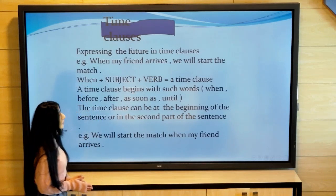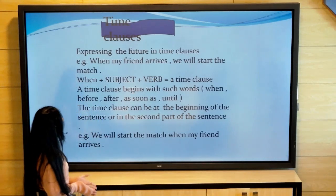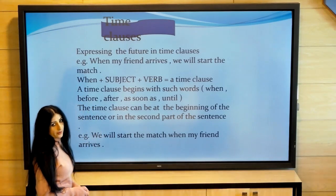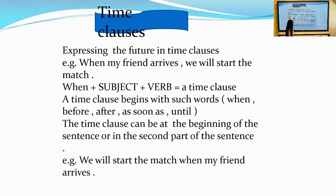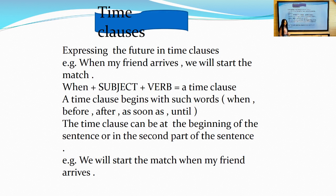I will move to the second section: time clauses. Expressing the future in time clauses. For example, when my friend arrives, we will start the match. When plus my friend (subject) and arrives (verb) - this is a time clause. I can use time clauses to express something in the future. When, subject (my friend), verb (arrives) - it's a time clause.